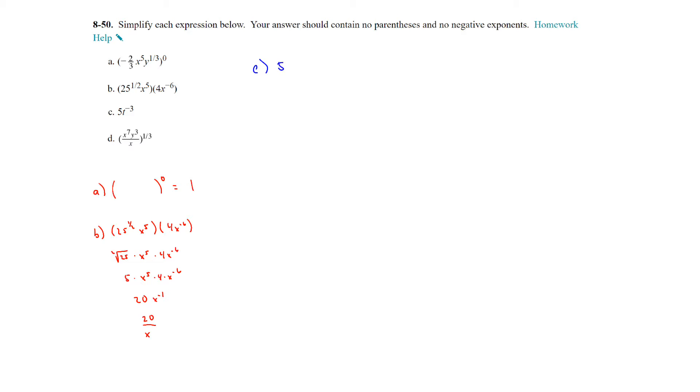Question C. 5t to the negative 3rd power. Only the negative 3 goes to the t. So the 5 stays in the numerator and the t to the negative 3 becomes t to the 3rd and is in the denominator.